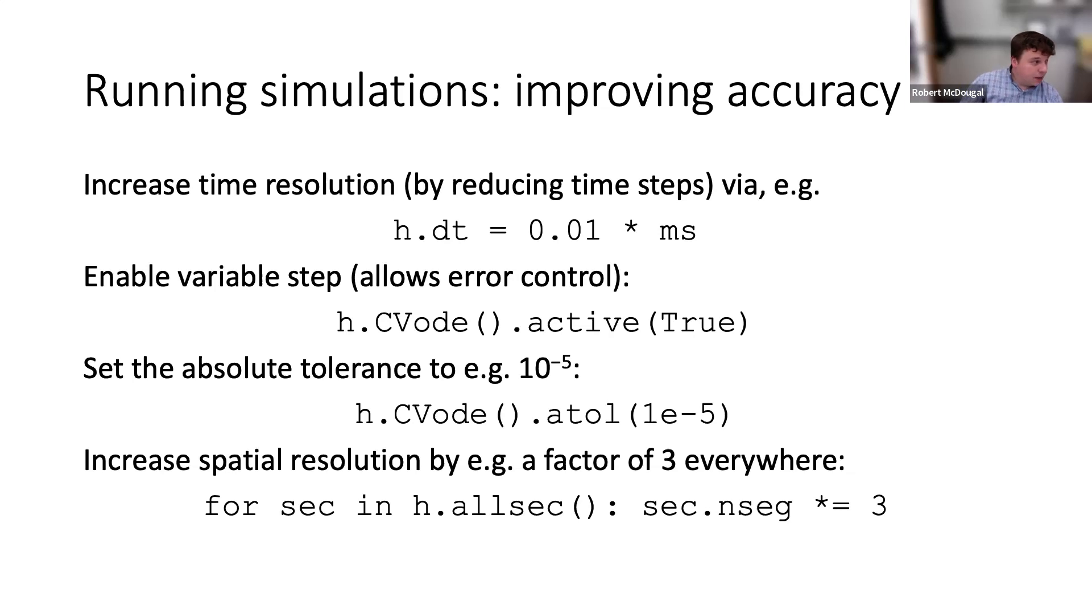Let me recap. We've looked at a number of ways of improving accuracy. We can increase the time resolution—if using fixed step, instead of 0.025 maybe use 0.01 milliseconds. We can use variable step, which allows us to explicitly specify error control. h.cvode().active() always works, but if using the graphical interface you have cvode_active(). You can also load a library called stdlib. You can specify the absolute error tolerance when doing that.